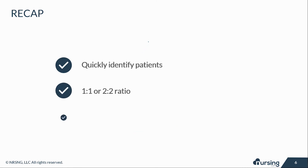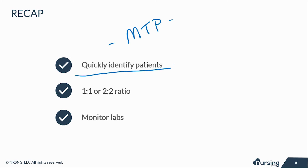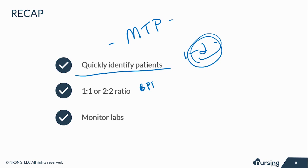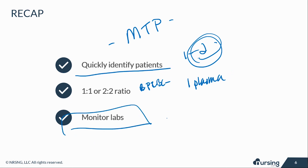To recap on massive blood transfusion protocols: you have to quickly identify the patients that need it. If somebody has a hemoglobin of one or two and they are hemodynamically unstable and they're bleeding, we need to get as much blood in them as quickly as possible. Activate the protocol, give packed RBCs along with plasma to prevent further bleeding, and then monitor labs — potassium, calcium — to make sure they're okay. And monitor for hypothermia.